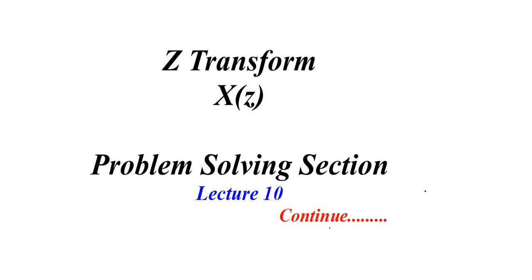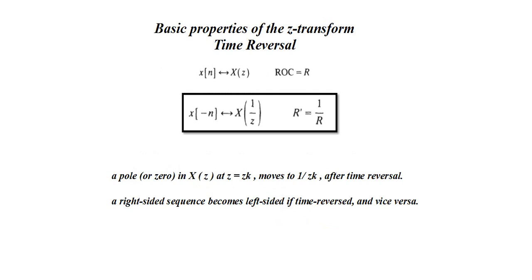In this lecture we will mainly focus on the time reversal property of the Z-transform. If there is a signal X(n) with Z-transform X(Z) and ROC indicated as R, then X(-n) is the time reversal form of X(n). Its Z-transform is represented by X(1/Z) and the ROC is also inverted to 1/R. We can also write this by replacing Z with Z raised to minus 1.